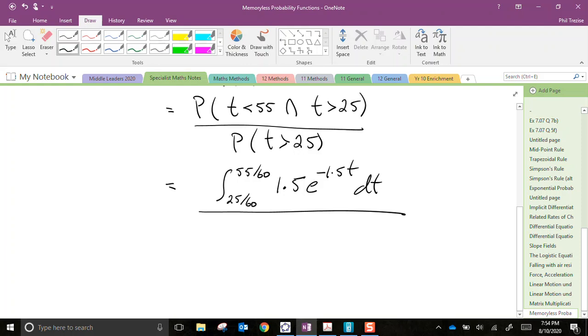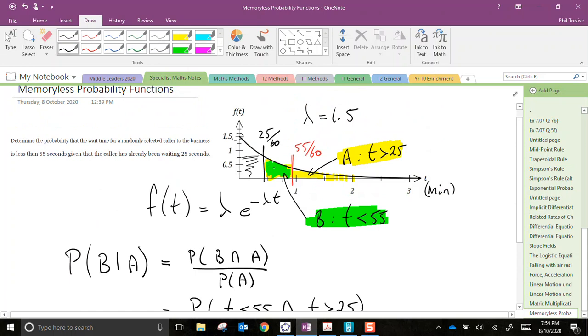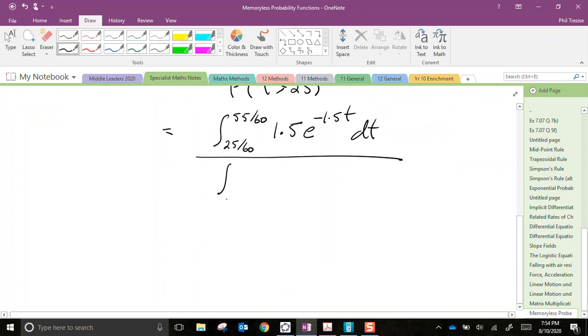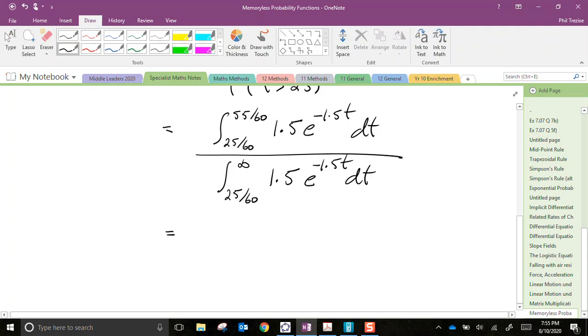And what about the chances that the probability is greater than 25? Well, greater than 25, the yellow patch goes all the way to infinity. So that's the integral from 25/60ths of a second to infinity of the same function.